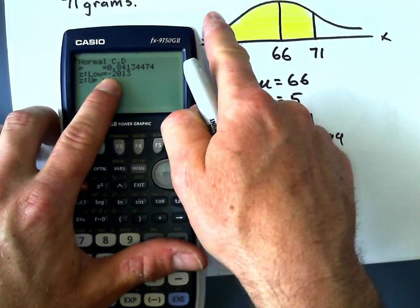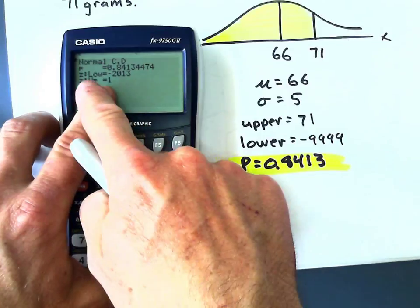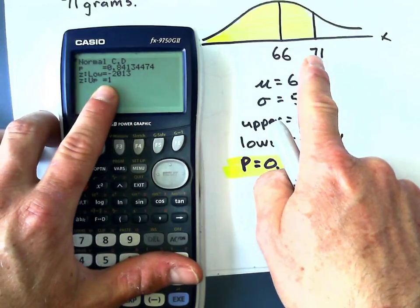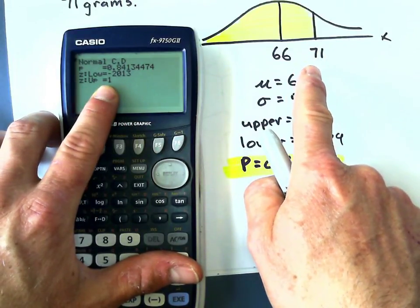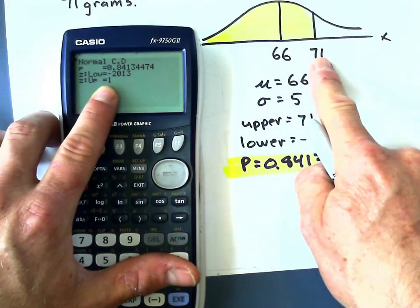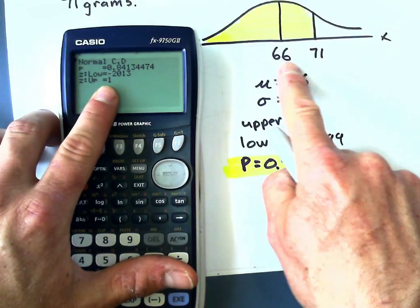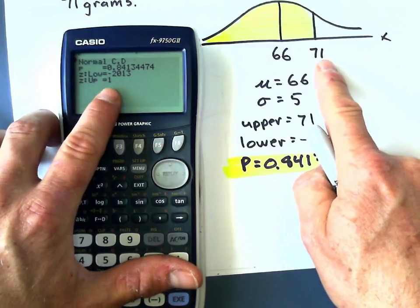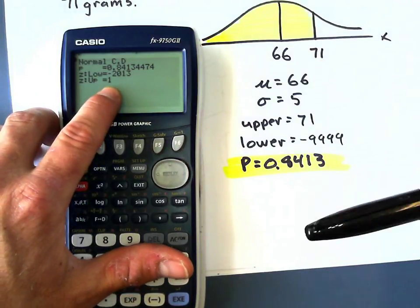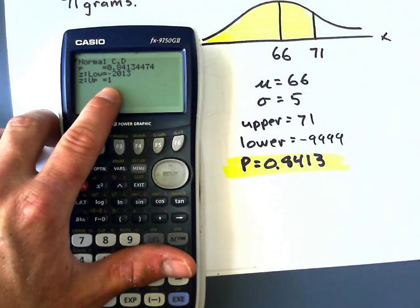It does give me the two z-values. The lower z-value is an extremely small negative value, of course, because I gave it a negative 9999. The upper z-value is 1, which makes sense because the standard deviation was 5 and that's 5 away from 66, so of course the z-value is 1 because the z-value tells you how many standard deviations it is from the mean.